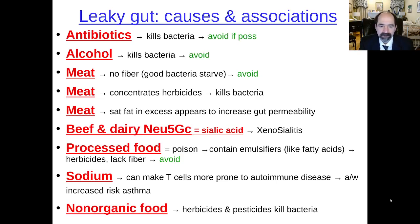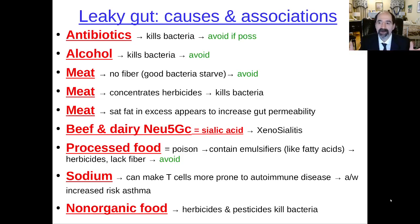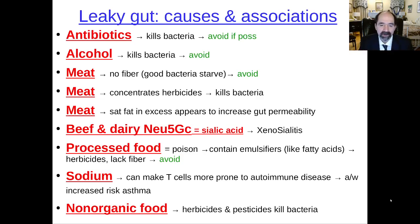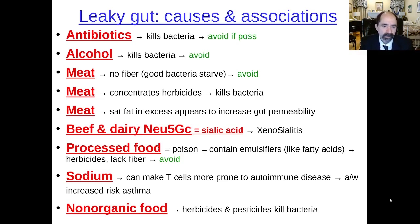Processed food is basically like a poison — you shouldn't be eating it. Processed foods contain emulsifiers, which like a fatty acid have both hydrophilic and hydrophobic components. They can pull oily material into the aqueous phase and keep everything mixed together. Without emulsifiers, the oil and aqueous layers would separate. Processed food also lacks fiber, another reason it's prone to causing leaky gut, and it tends to contain a large amount of herbicides, which also predispose to leaky gut.